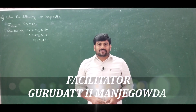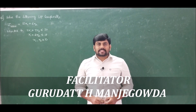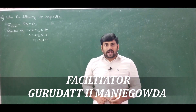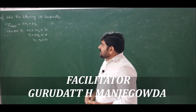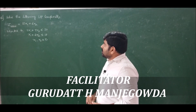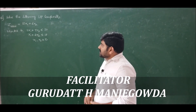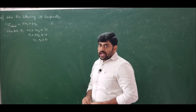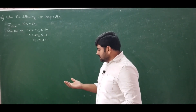Welcome, dear learners, to this course on operations research. In module 1, we were discussing the formulation of linear programming problems and solving them using the graphical method. We are discussing additional problems on linear programming. Problem number 12 states: solve the following LP problem graphically — z max equals 10x1 plus 6x2, subject to 5x1 plus 3x2 ≤ 30, x1 plus 2x2 ≤ 18, and x1, x2 ≥ 0. Let us solve this problem.